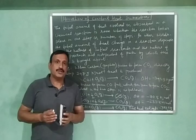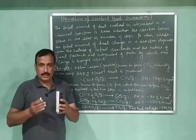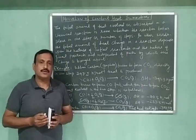And this law was given by a Russian chemist G. H. Hess in the year 1840. And he gave this law about the heat of reactions on the basis of certain experimental observations.